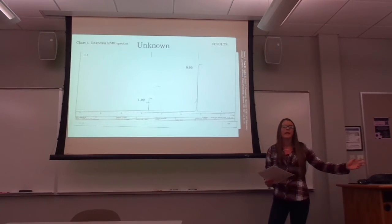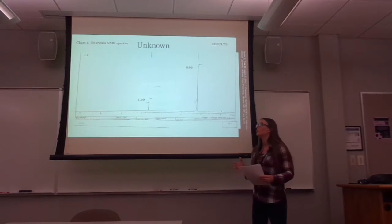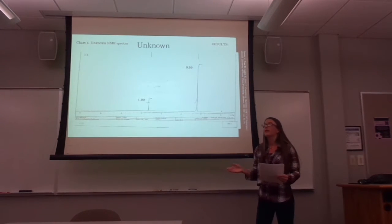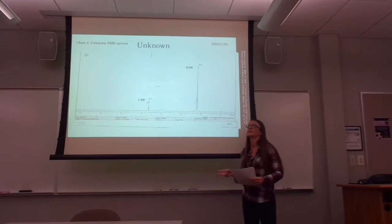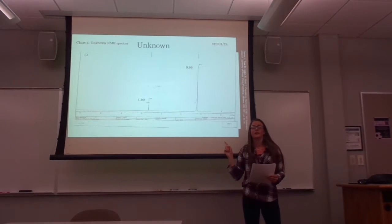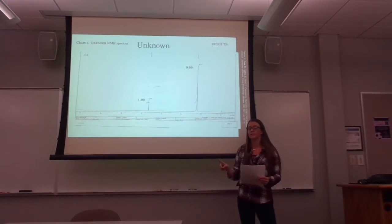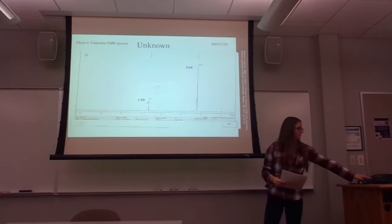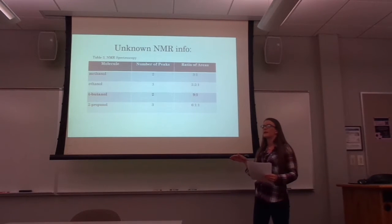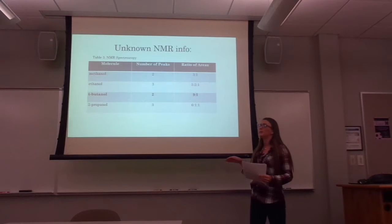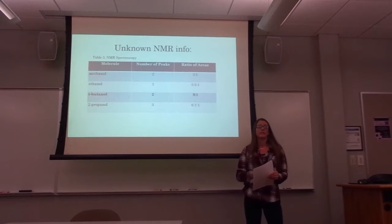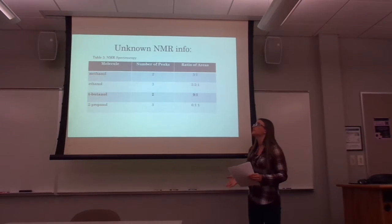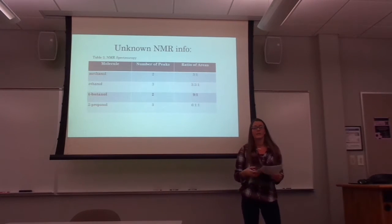To further determine which of the four compounds we have, we look at the NMR spectrum. This spectrum shows two different peaks — meaning two different types of hydrogens — and a peak ratio of 1 to 9, meaning one hydrogen versus nine other hydrogens. Out of our four narrowed-down options, t-butanol is the only one with the correct functional groups and matching peaks and peak ratio. Therefore, by looking at both IR and NMR spectra, the unknown compound is t-butanol.